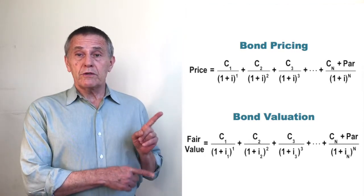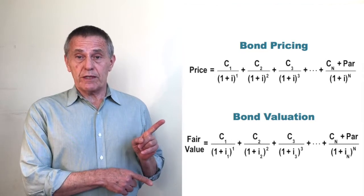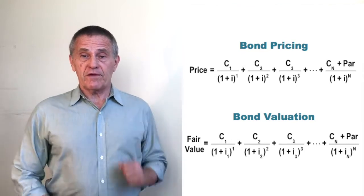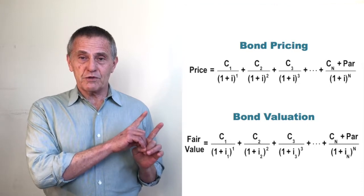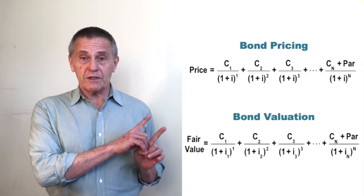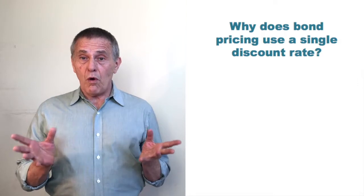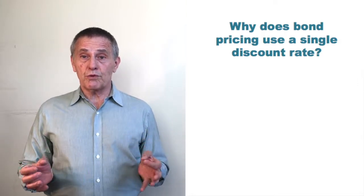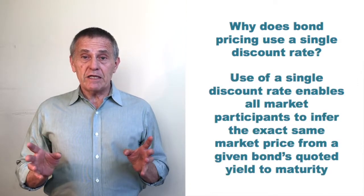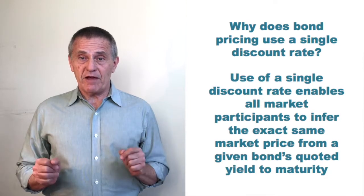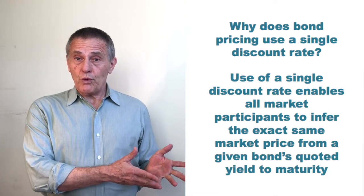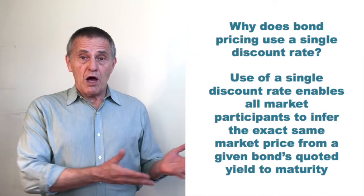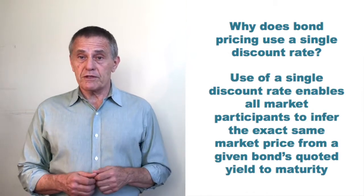Why do we want to use different sets of interest rates when doing pricing versus valuation? One of the reasons for discounting all the cash flows by the same interest rate when pricing a bond is so that all market participants interpret the bond's yield to represent exactly the same price.